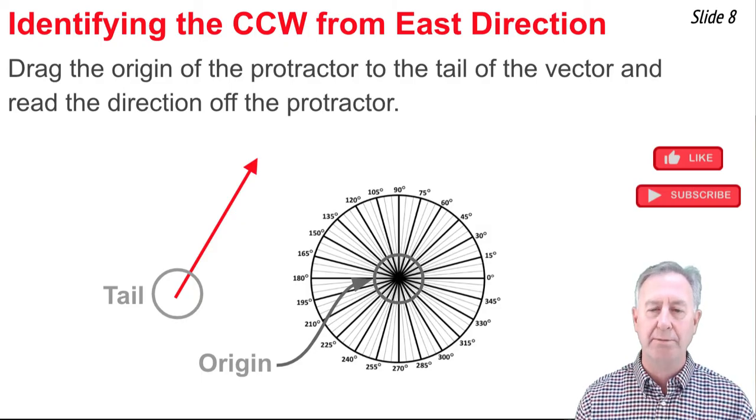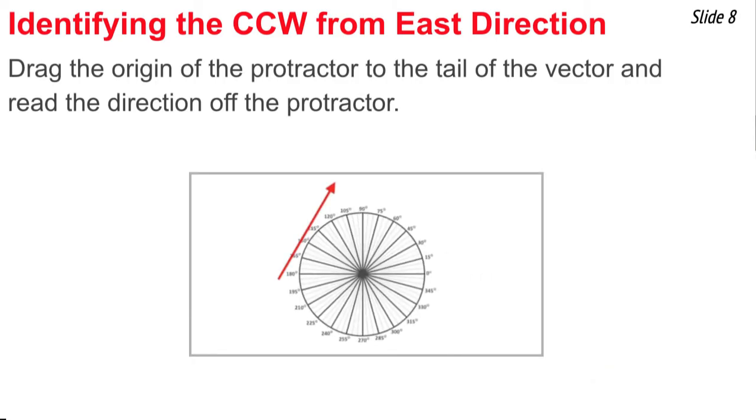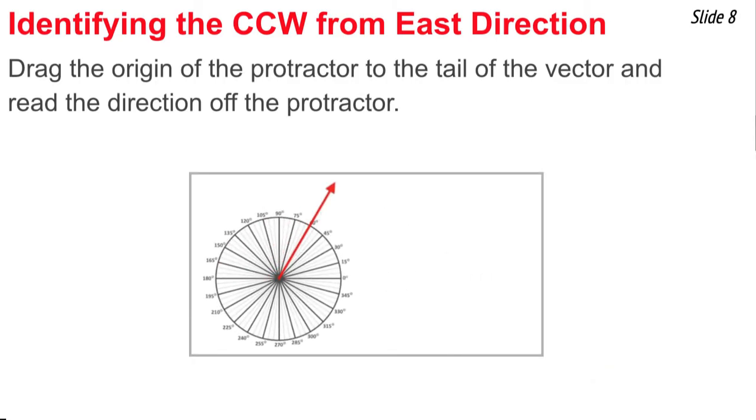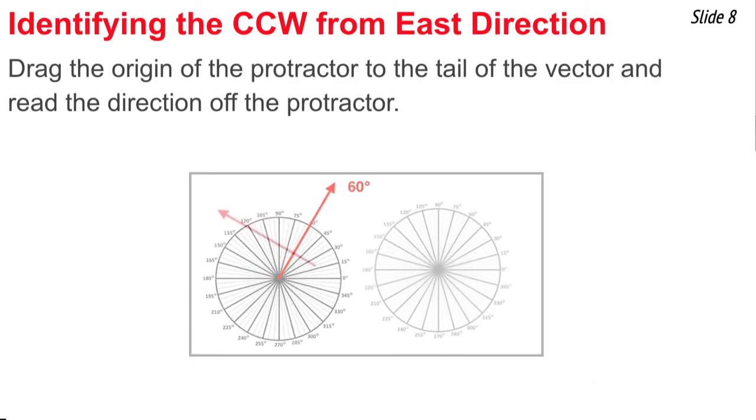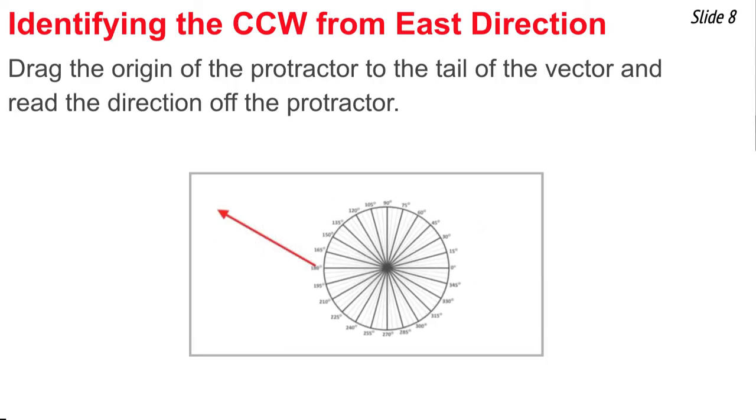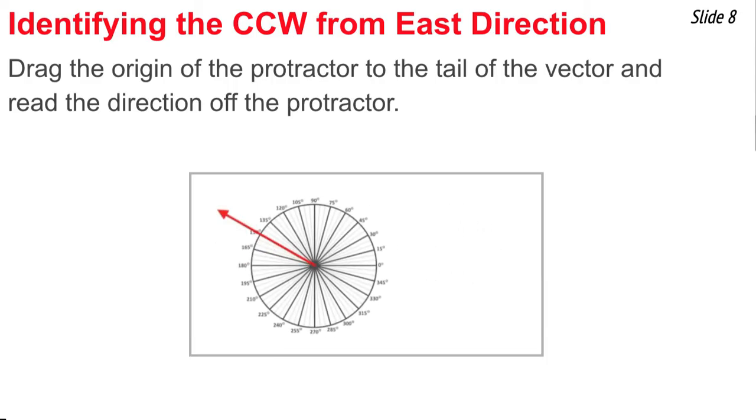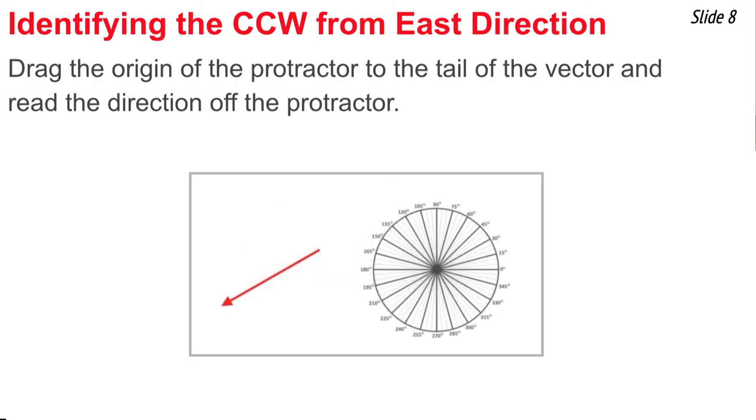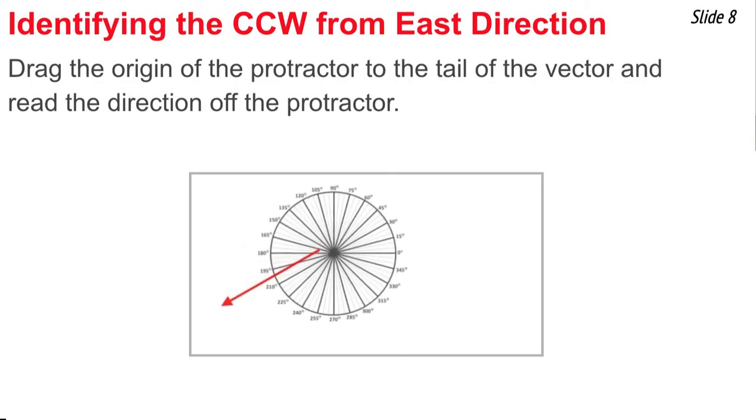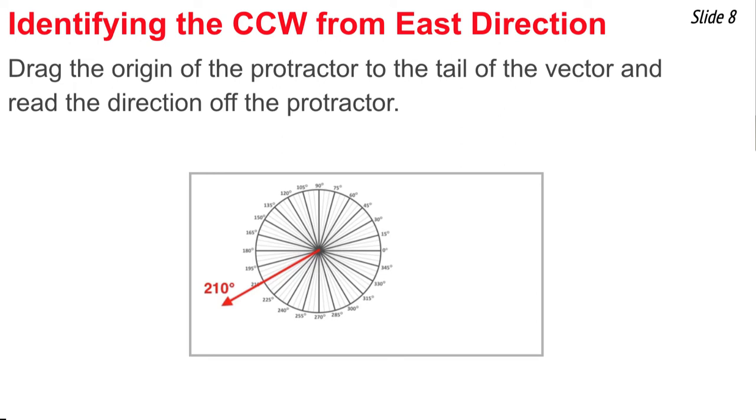Here are six examples of how it's done. In this animation, you'll notice how the protractor is dragged such that the origin lines up with the tail of the vector. Once done, a reading is made off of the protractor. All you have to do to make the reading is look where the arrow goes through the perimeter of the protractor and just read the value that's there.